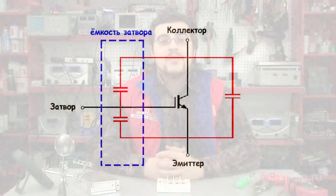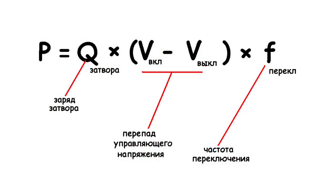IGBT behavior under dynamic modes primarily depends on gate capacitances and the control circuit's internal and external impedances. Gate capacitances do not depend on temperature; they respond to collector-emitter voltage more clearly if the reverse voltage drops. The gate charge, depending on gate-emitter and gate-collector capacitances, is a key parameter in calculations of control circuit dissipation power. Such energy depends on the gate charge and control voltage variations, making it possible to calculate the driver power.